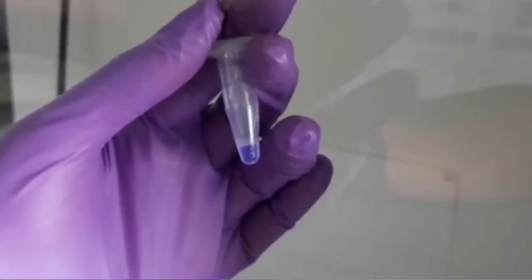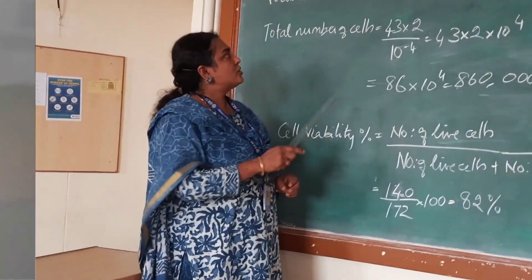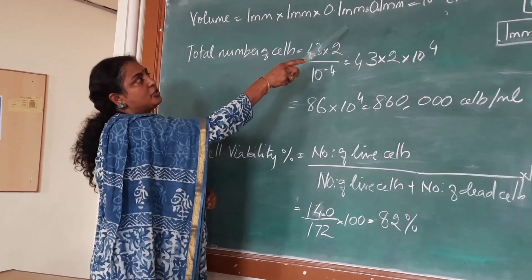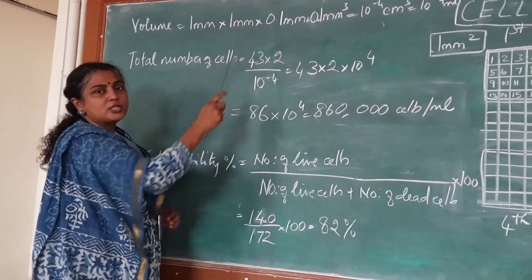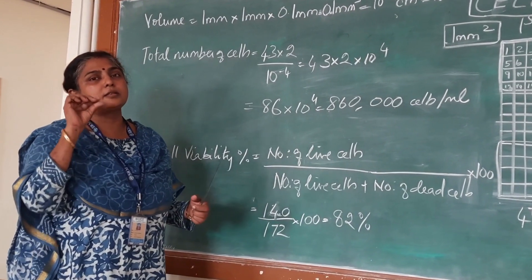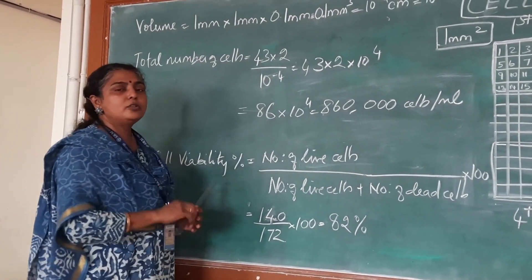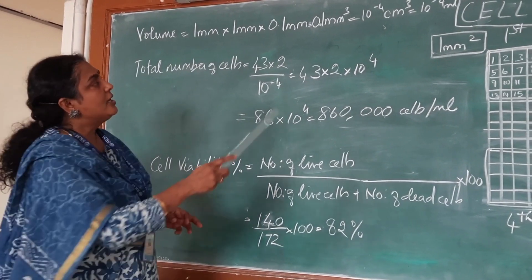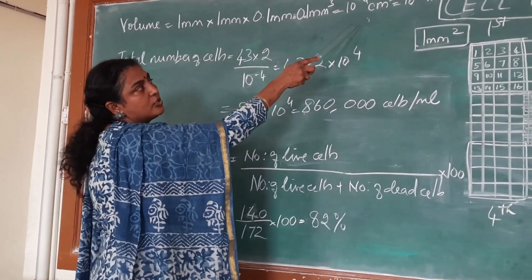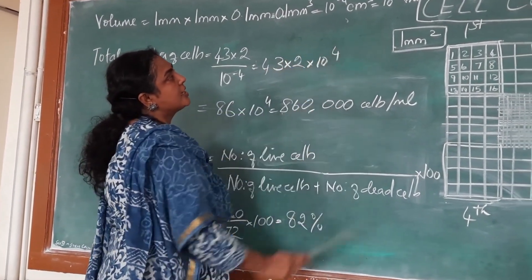Dead cells have a leaky and porous cell membrane, so Trypan Blue enters them and they appear blue in colour. Live cells do not take up Trypan Blue and appear transparent. The volume of the hemocytometer is length × breadth × height: 1mm × 1mm × 0.1mm (the depth between the hemocytometer and the coverslip), giving a volume of 0.1 mm³, equal to 10 to the power of minus 4 cm³.